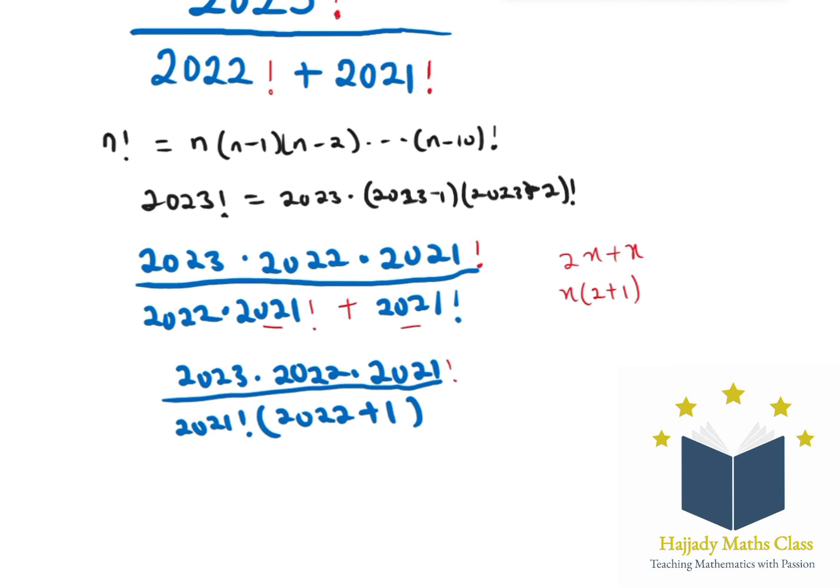With this I have that 2021 factorial can easily cancel out 2021 factorial. So I'm going to be left with 2023 multiplied by 2022 over 2022 plus 1, which is 2023. Canceling out, finally my answer is going to be 2022. Thank you very much for watching my videos. Please kindly subscribe for more videos. See you next time.